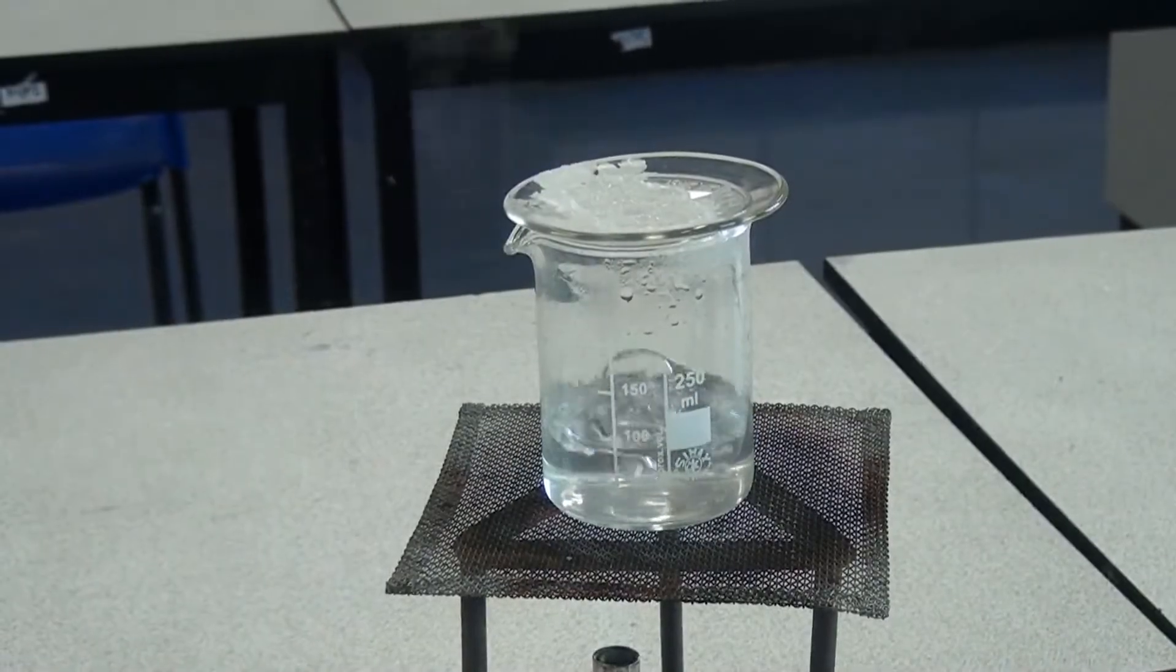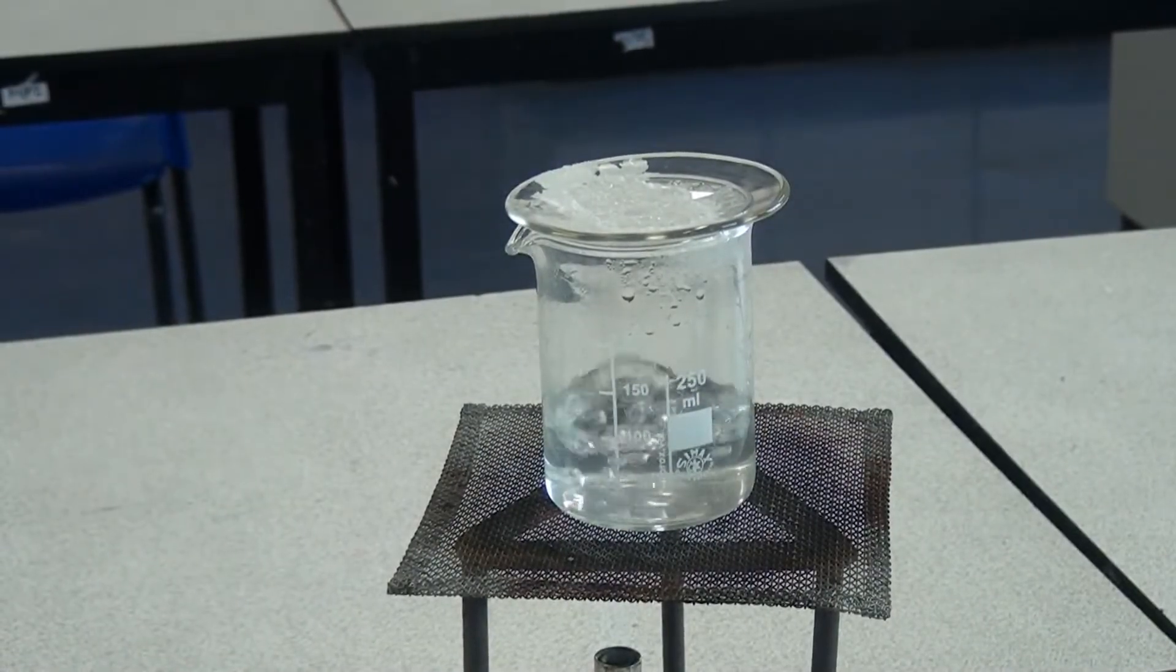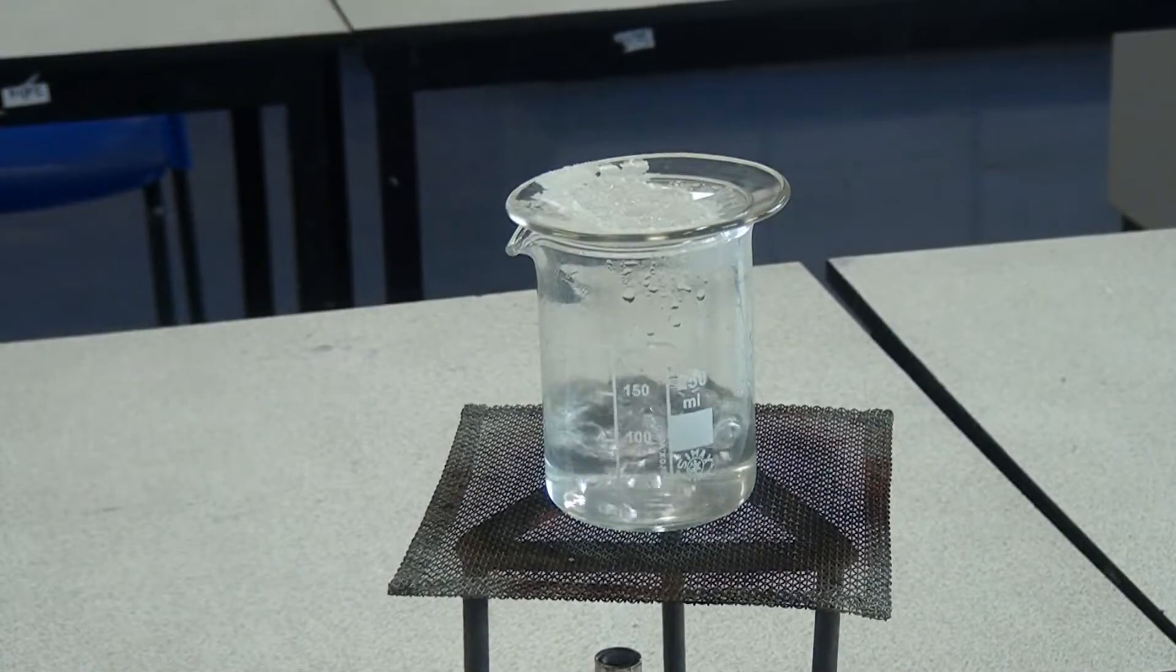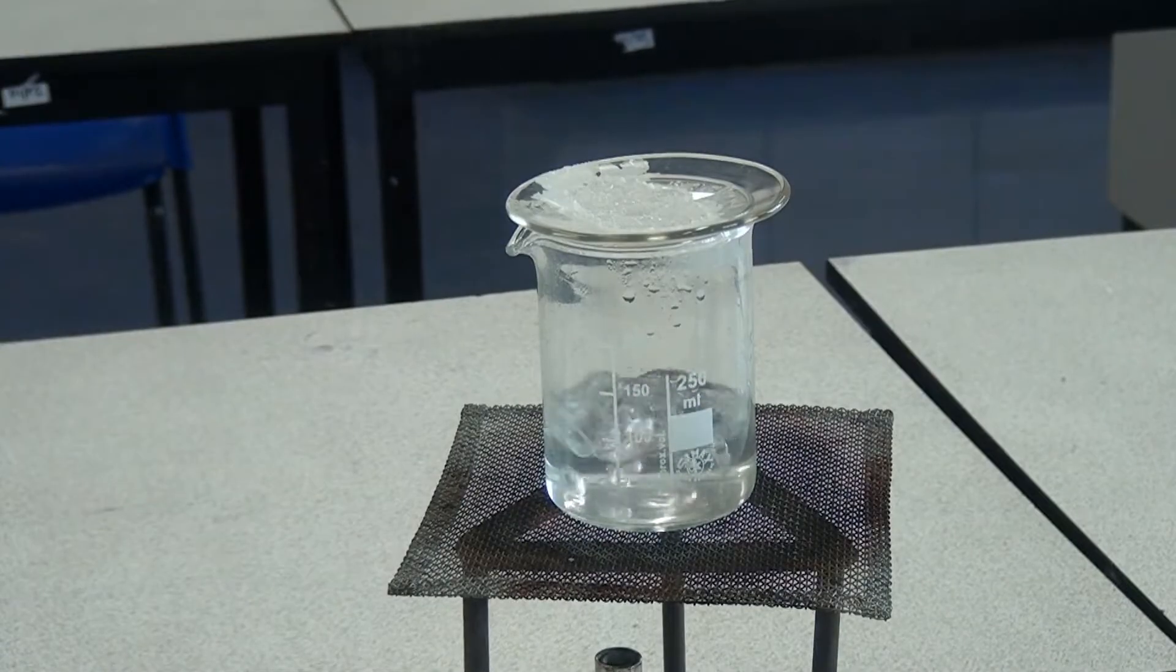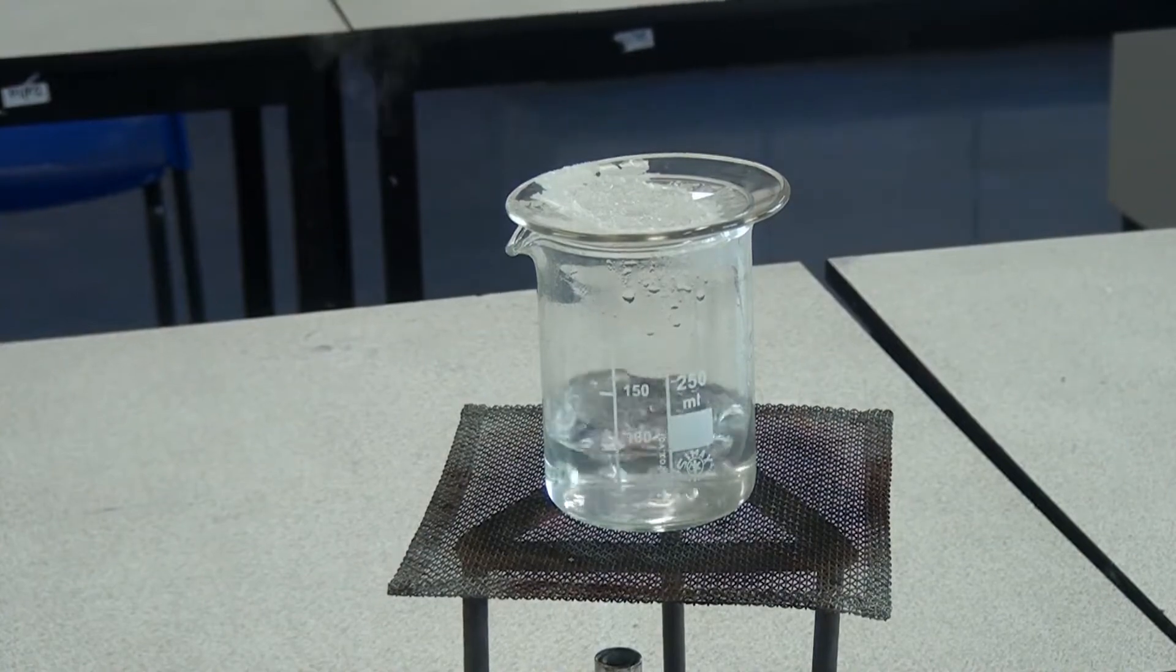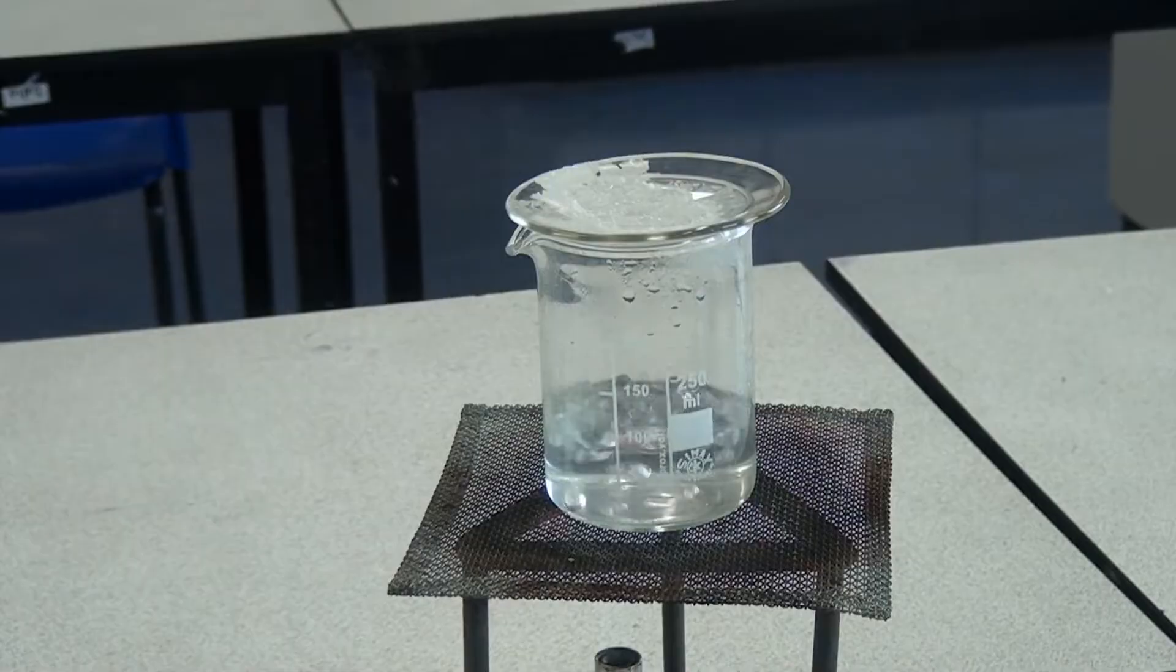We can see now that the water has evaporated from the sample of seawater and it's left behind any dissolved salts on the watch glass. So I'm going to turn the Bunsen burner off, let it cool down, and then we're going to work out how much of those dissolved salts were in that sample of water.